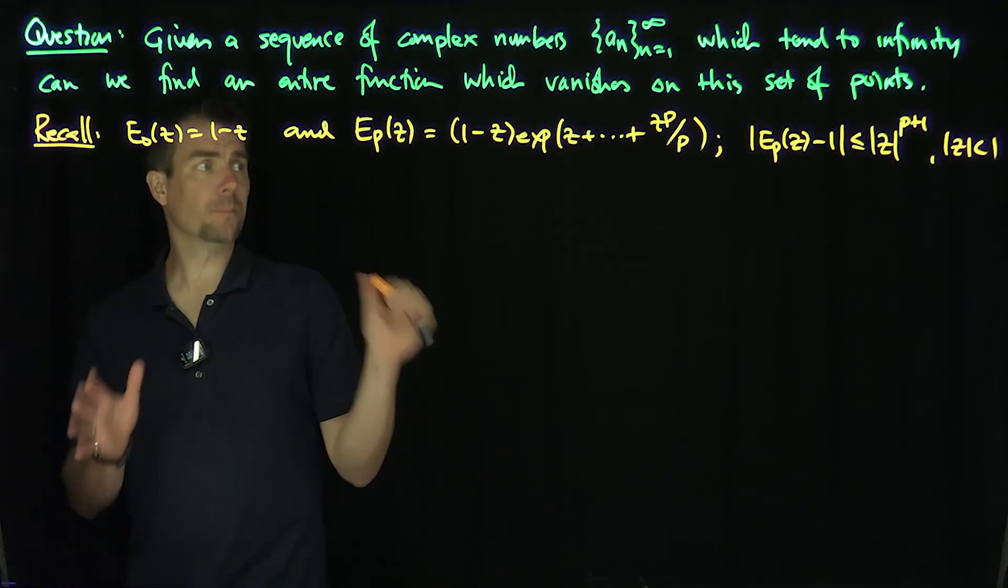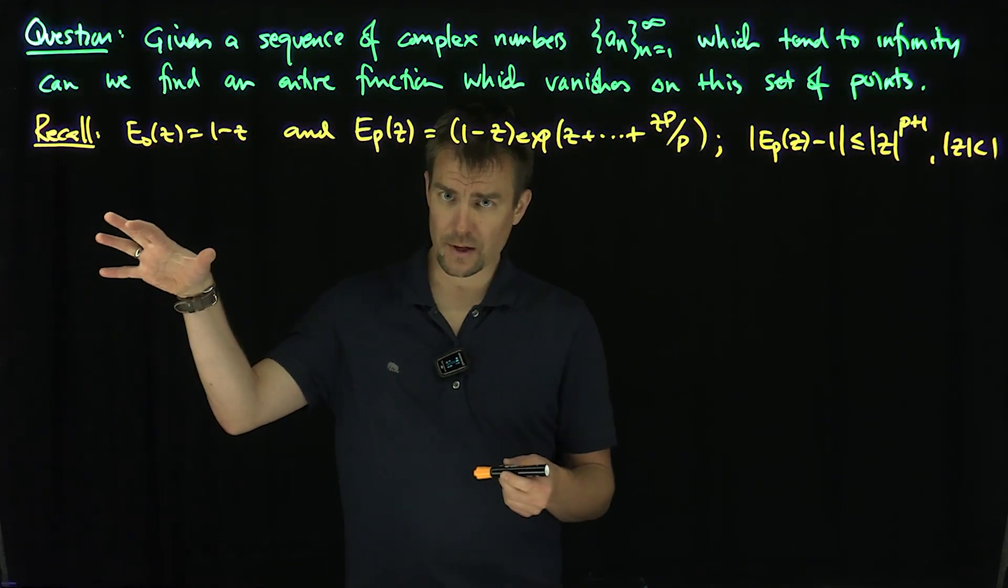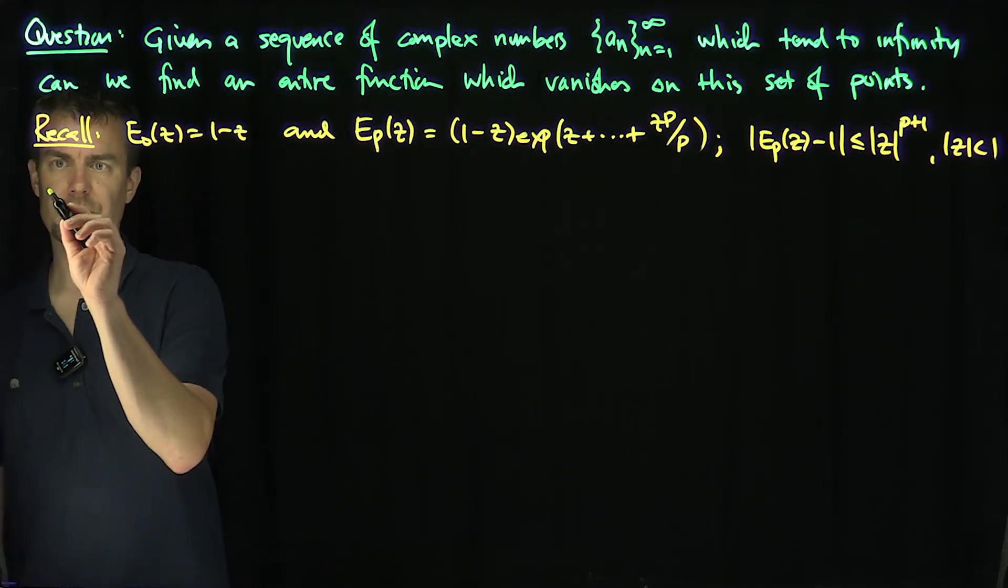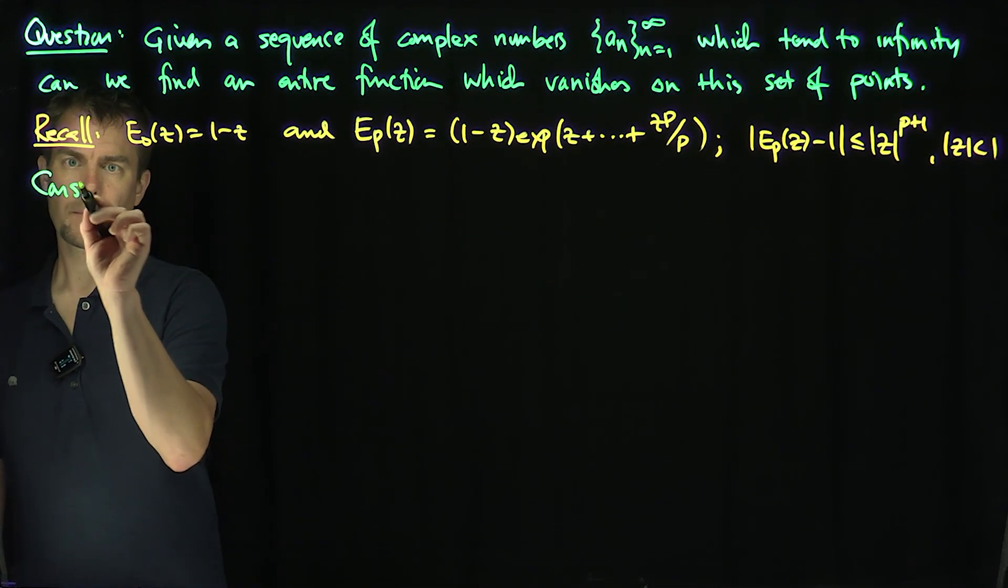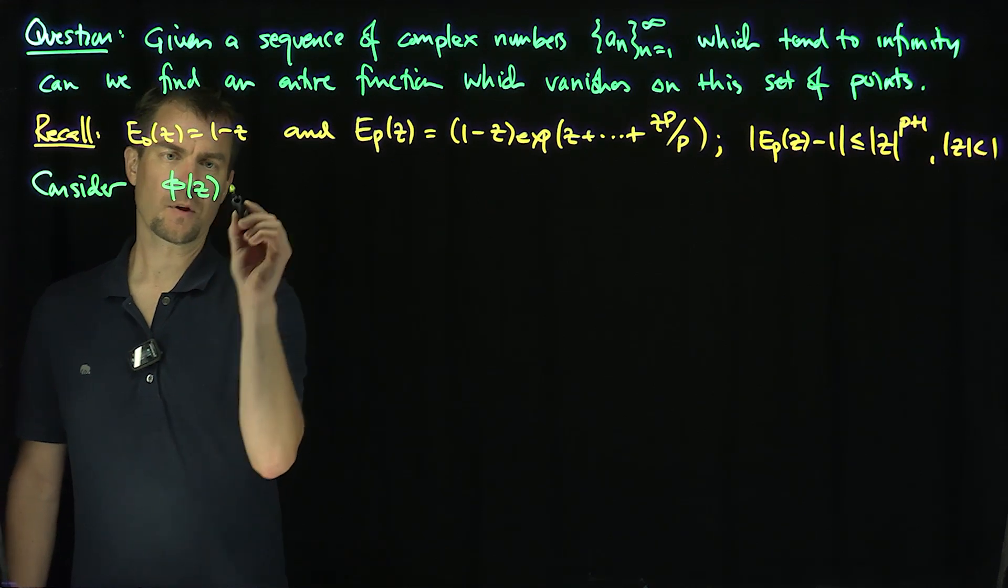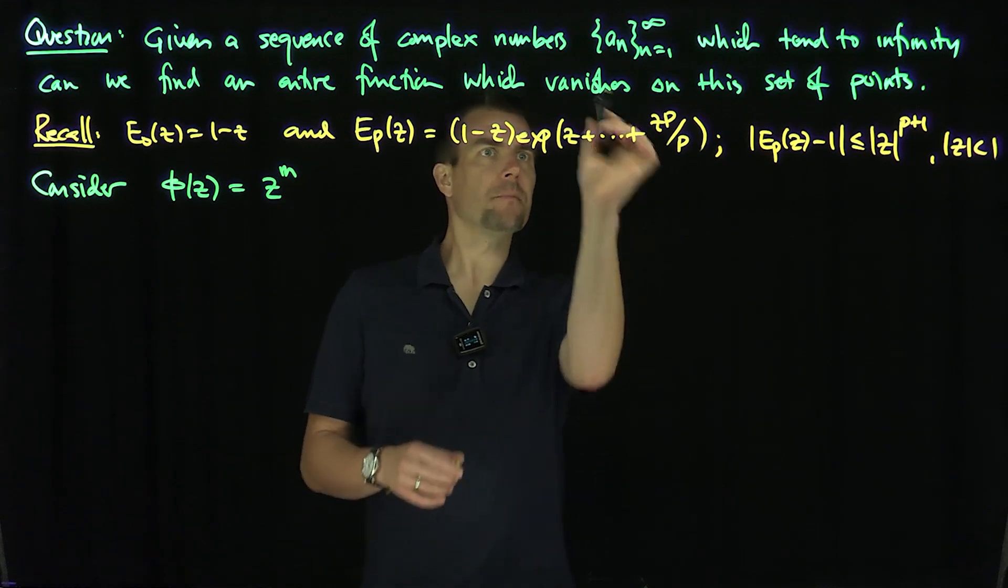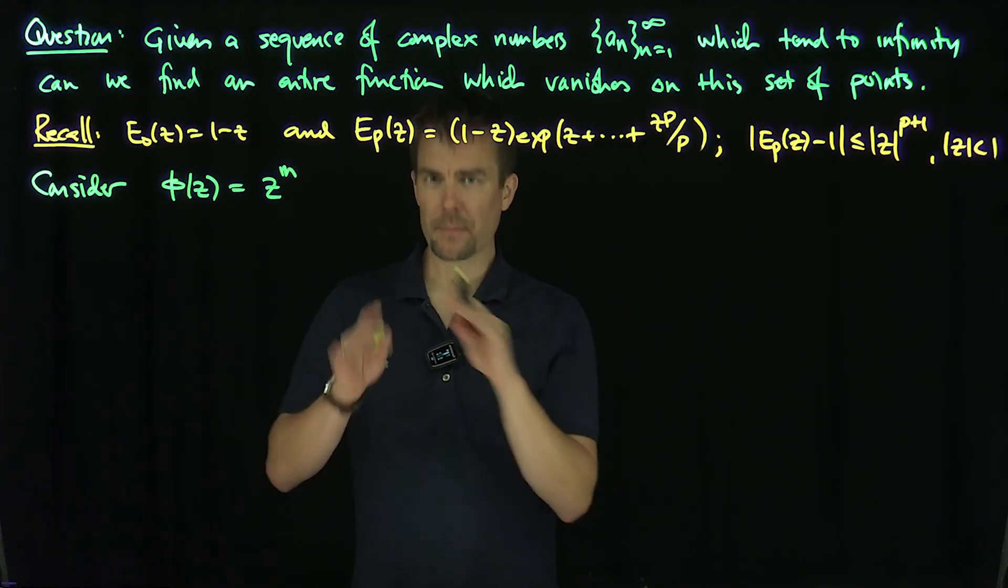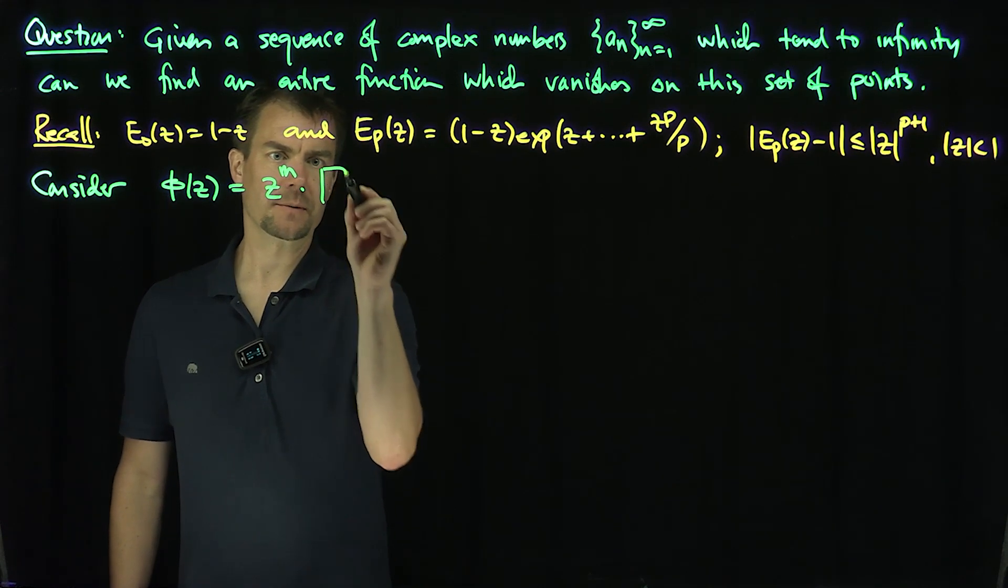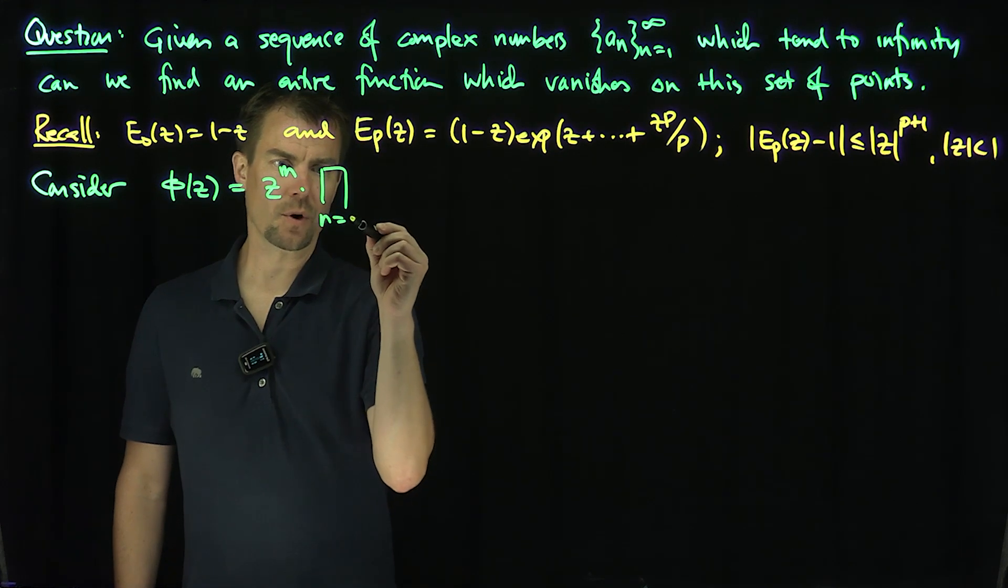This is going to help me determine when the product converges. So I'm going to build a function and tell you what the conditions on p_n have to be. Let's consider the function phi(z), which is z to the m. Maybe 0 is in this sequence for a whole bunch of things, so I'm going to take care of 0 in a special way. z to the m times the product n goes from 1 to infinity,